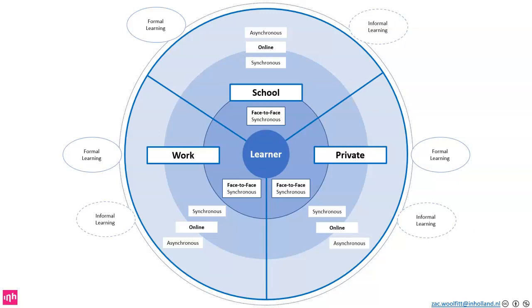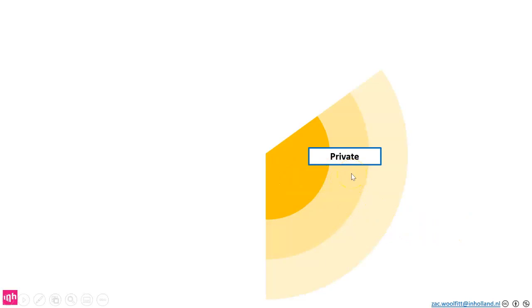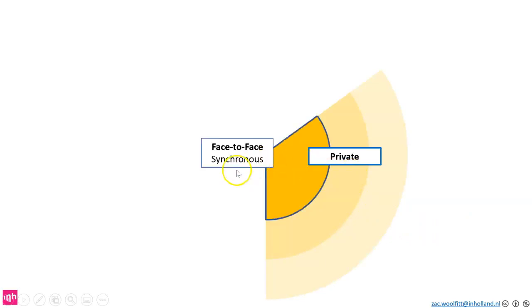So this is the main model I present to you. I'd love to get your input on it. I'm going to give you some examples of each of these sections to try to bring a little bit of colour in. The first one I'd like to look at is learning in private. Here we are in the private sphere — it's face-to-face, it's synchronous, those interactions are happening at that moment, and it's informal learning.